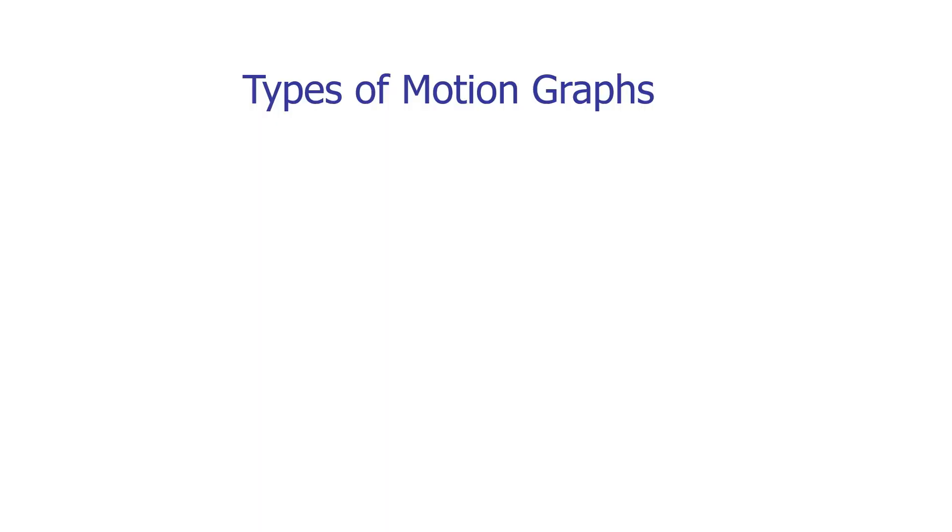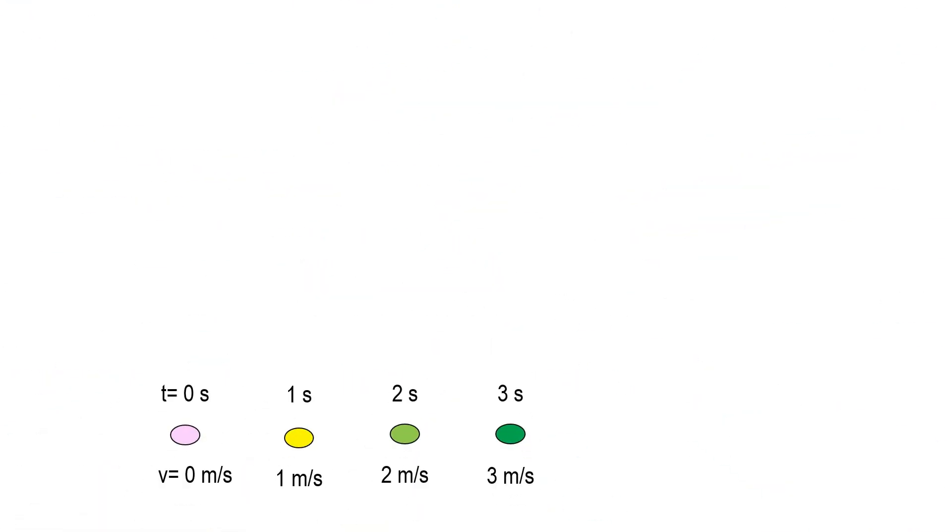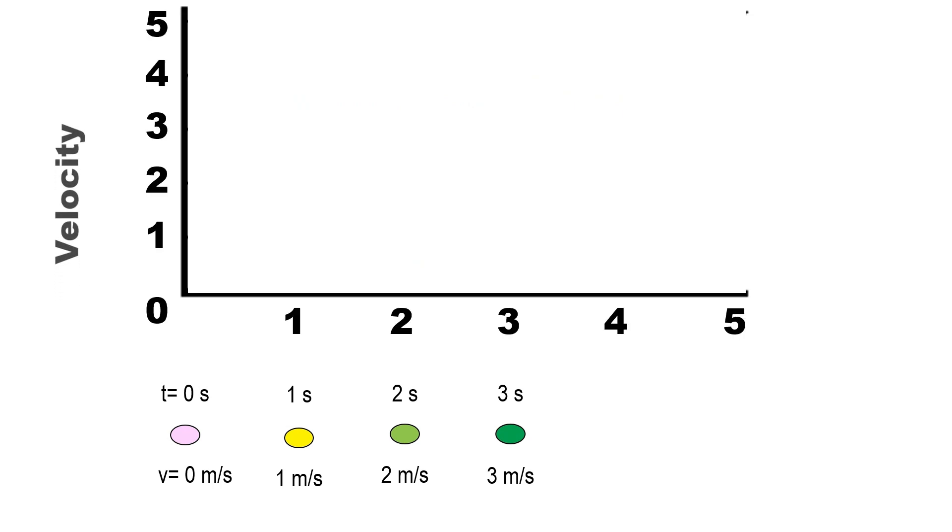The next graph is the velocity and time graph. Similar to the displacement versus time graph, we just replace the displacement with velocity in the y-axis. Let's use a graph where an object travels 3 seconds, so the set of values covers the time interval from 0 to 3 seconds.